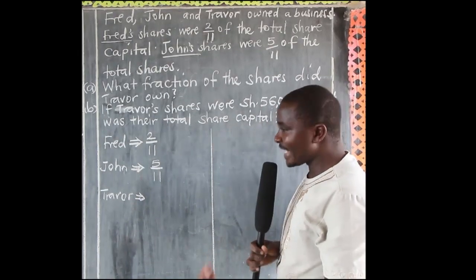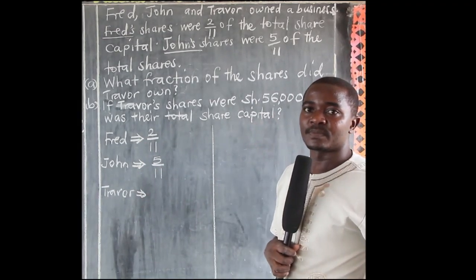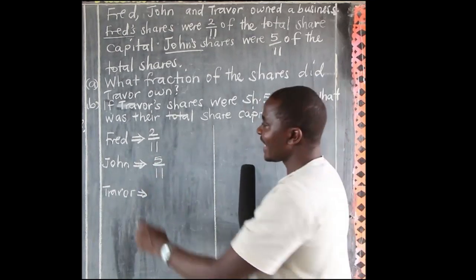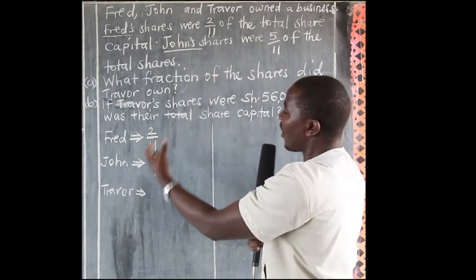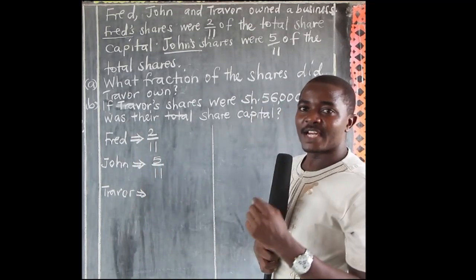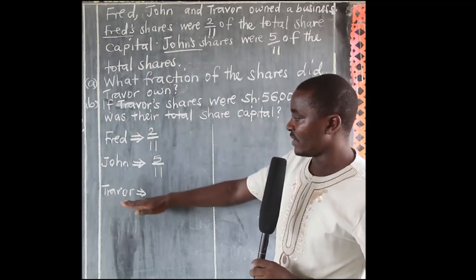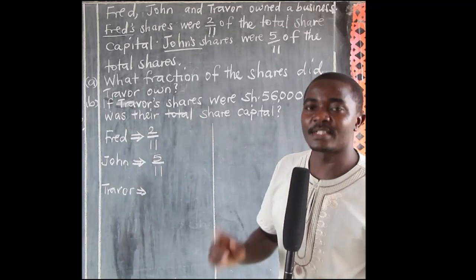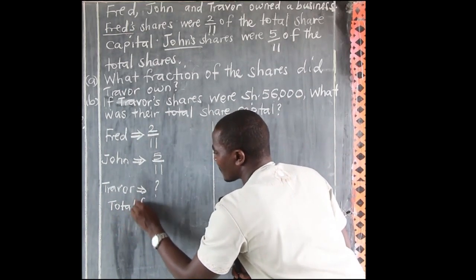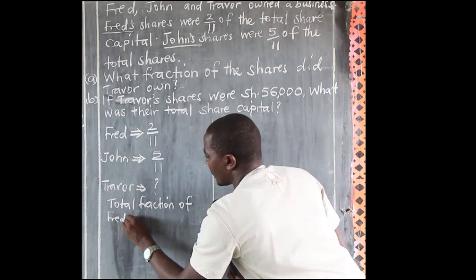We shall first get the total fraction for Fred and John, because there are three people owning the business. After getting the total of Fred and John, we subtract it from a whole in order to get Trevor's fraction. To get the fraction for Trevor, we get the total fraction of Fred and John.